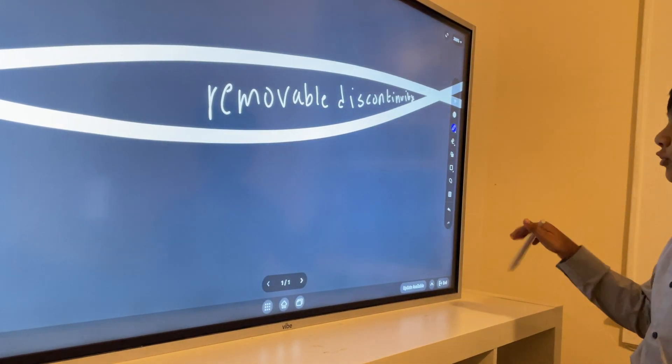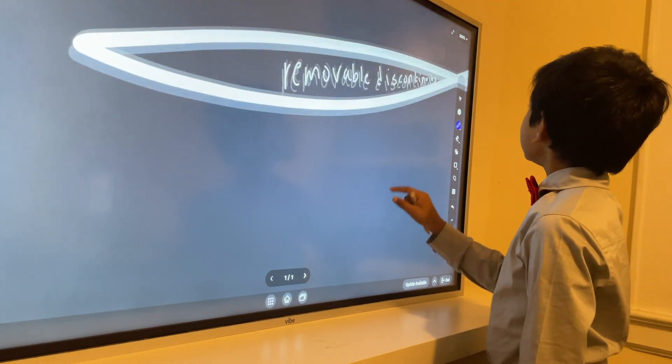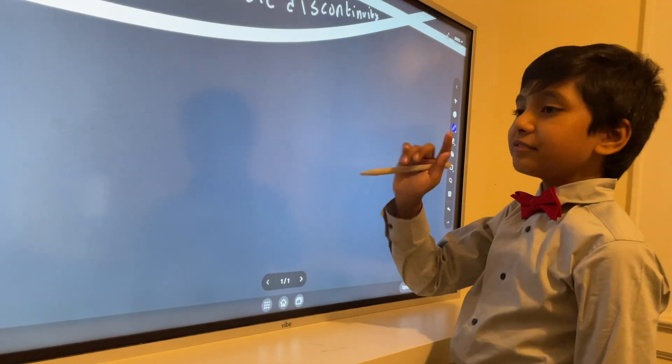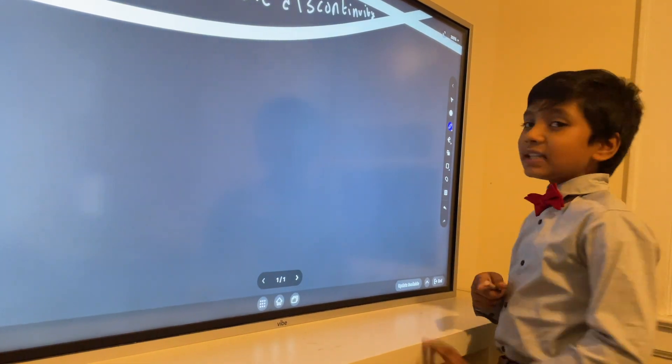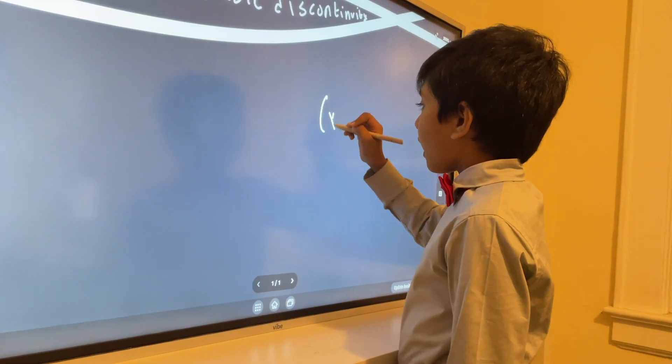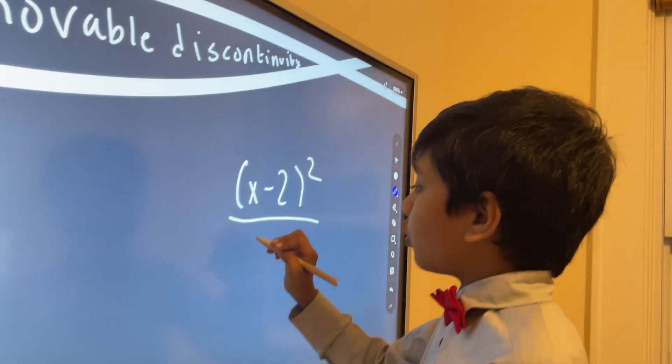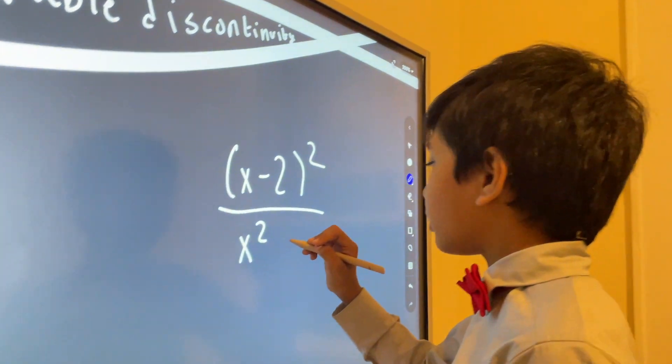Anyways, removable discontinuity, what does it do? Well, let's say we draw a graph. No, let's say we have a function, kind of like (x-2)² over x²-4.